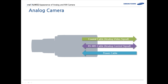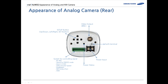An analog camera is a camera that transmits video data in analog signal through the coaxial cable. If you look at the rear of the analog camera, we have a setup button, up-down, left-right, and a select button at the middle. Those buttons are for users to access the main menu.